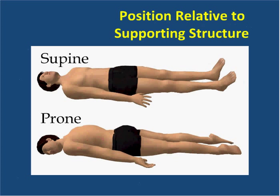Patients will not always present standing up — they may be lying on a supporting structure. So we use the terms supine and prone. When someone is supine, they're lying flat on their back with the face pointing forward. When they're prone, they're lying face down. The only easy way to remember this is that when they're prone, the posterior — their back — is highest in the air.